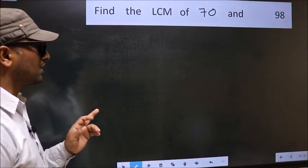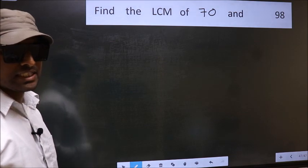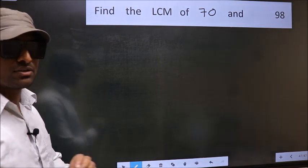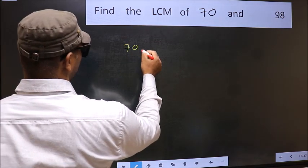Find the LCM of 70 and 98. To find the LCM, we should frame it in this way: 70 comma 98.